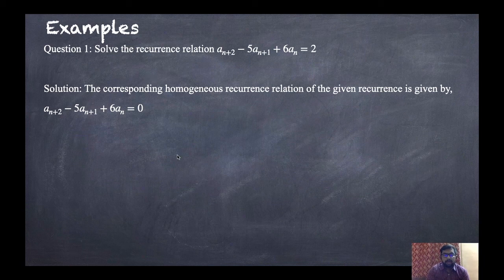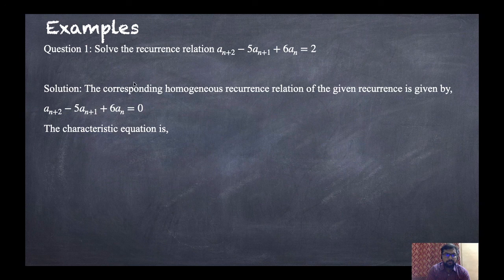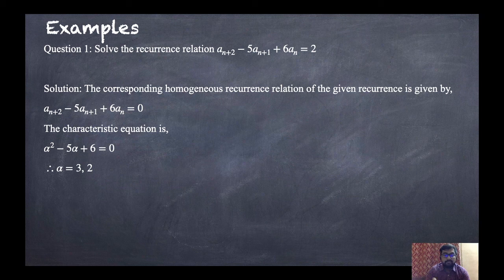The characteristic equation is of order 2, so alpha² minus 5·alpha plus 6 equals 0. The factors are (alpha minus 3)(alpha minus 2), giving us alpha equals 3 and alpha equals 2.